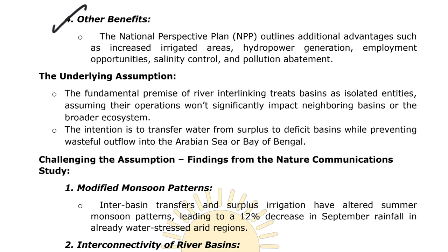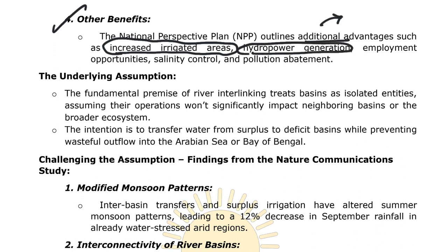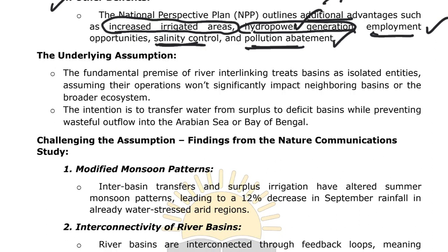The fourth category includes other benefits outlined in the National Perspective Plan: increased irrigated areas, hydropower generation, employment opportunities, reduction of salinity, and pollution abatement. These are the additional benefits regarding river interlinking.